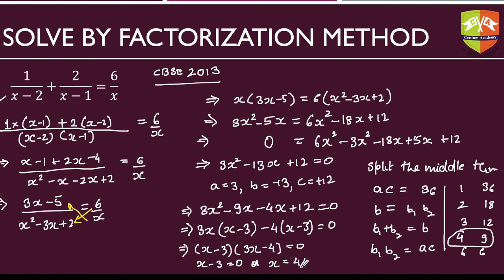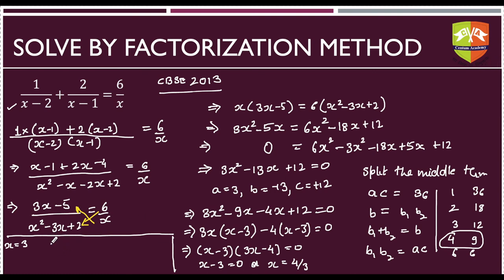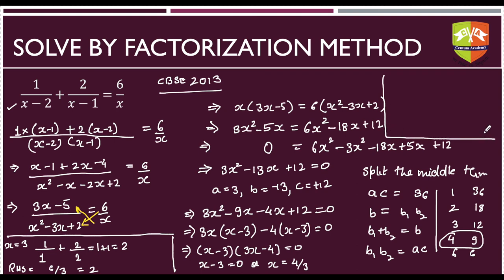This gives x equals 3 or x equals 4/3 as solutions. It is good practice to verify the solutions. Checking x equals 3: LHS is 1/(3 minus 2) plus 2/(3 minus 1) equals 1 plus 1 equals 2. RHS is 6/3 equals 2. So x equals 3 satisfies the equation.